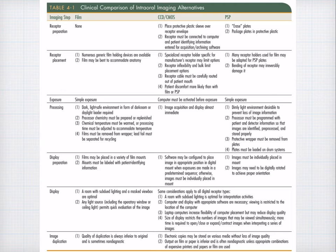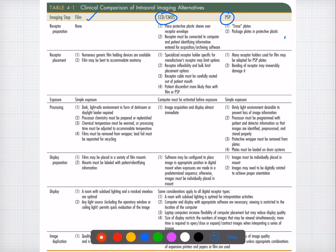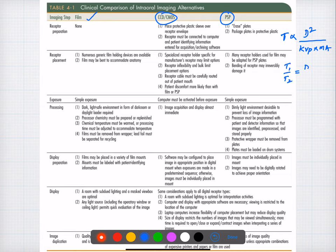Question forty-three: the formula is that exposure time T is directly proportional to distance squared divided by KVP × mA. The formula to apply is T1/T2 = (D1/D2)². Applying this to question forty-three, the answer will be two seconds.